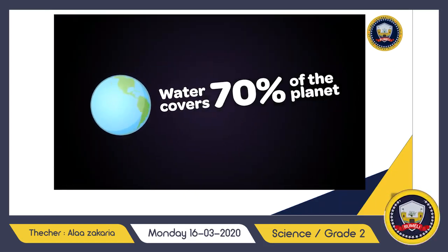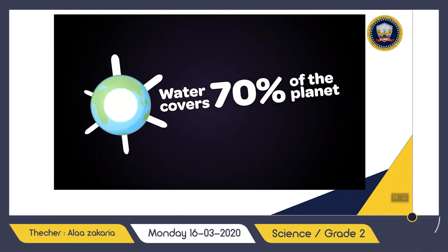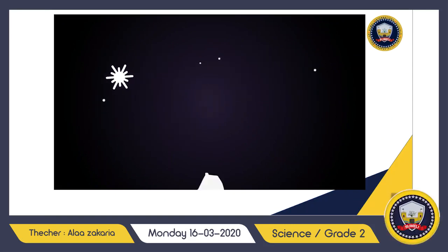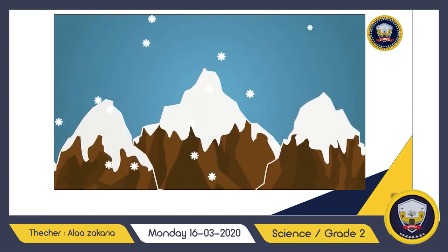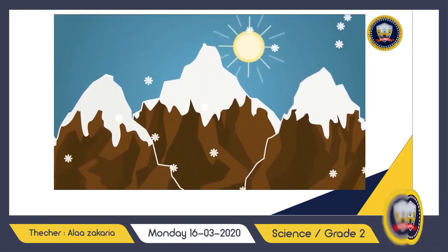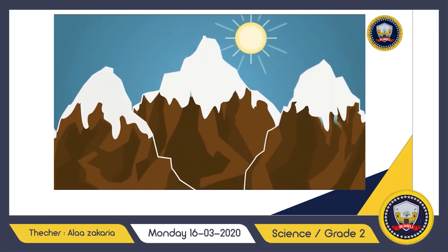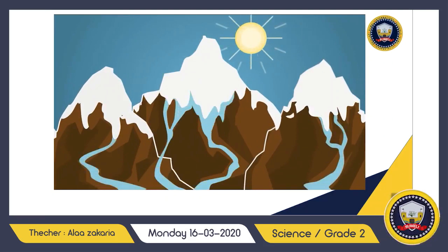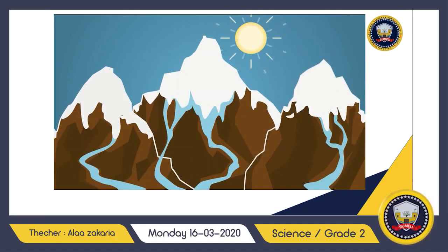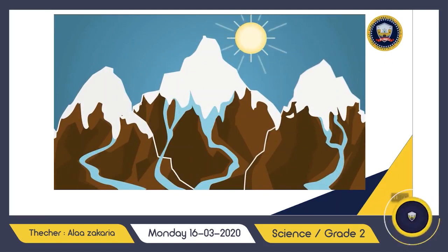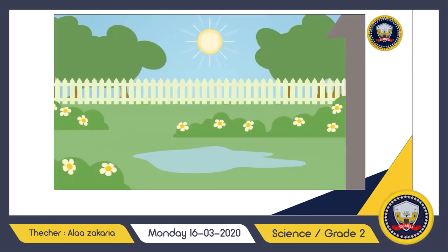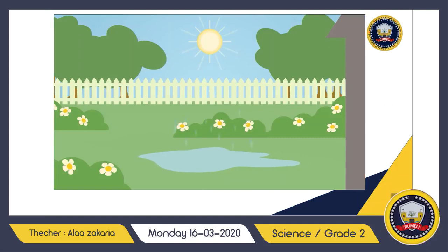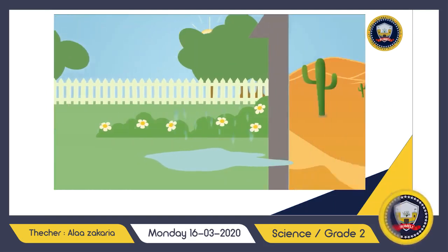Water in its most common form as a liquid covers about seventy percent of the planet. It also has no taste, smell, or color. Water constantly changes states in nature. In very cold places like the mountains, the water freezes into ice and snow. The sun then warms the frozen water, causing it to melt to liquid water.